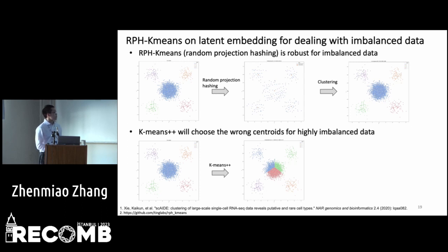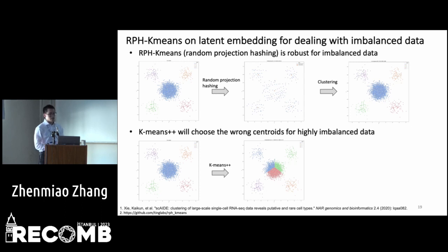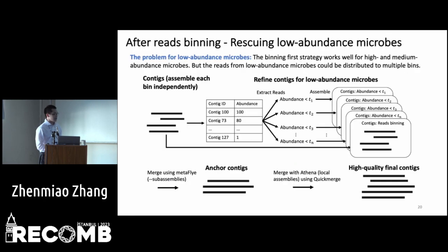This is a comparison between LPHK-means and the K-means++ algorithm. On a small, highly imbalanced dataset, LPHK-means produces accurate results, but K-means++ generates wrong results because it chooses wrong centroids.